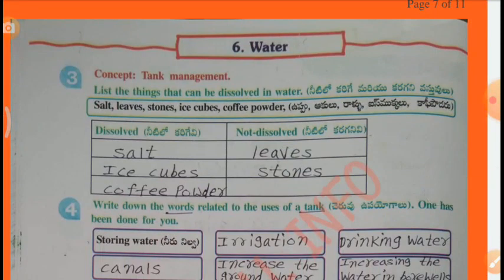Concept: Tank management. List the things that can be dissolved in water — Salts, Leaves, Stones, Ice cubes, Coffee powder. Dissolved: Salt, Ice cubes, Coffee, Fodders. Not dissolved: Leaves, Stones.